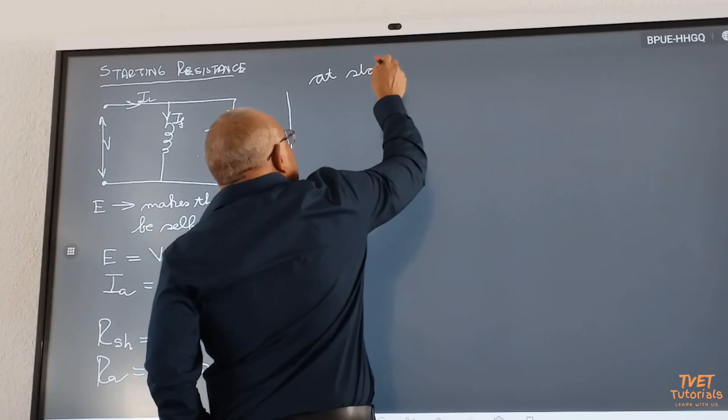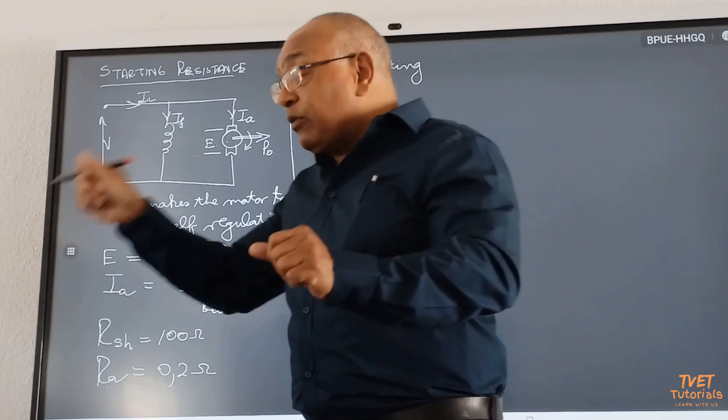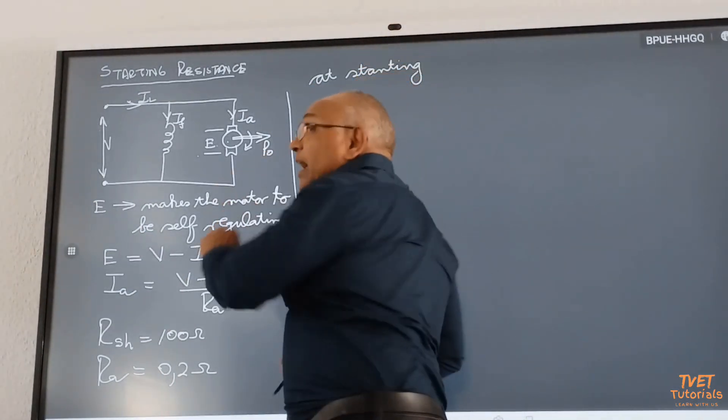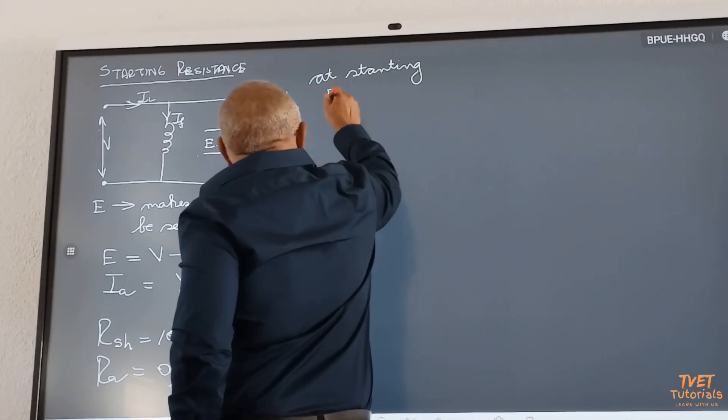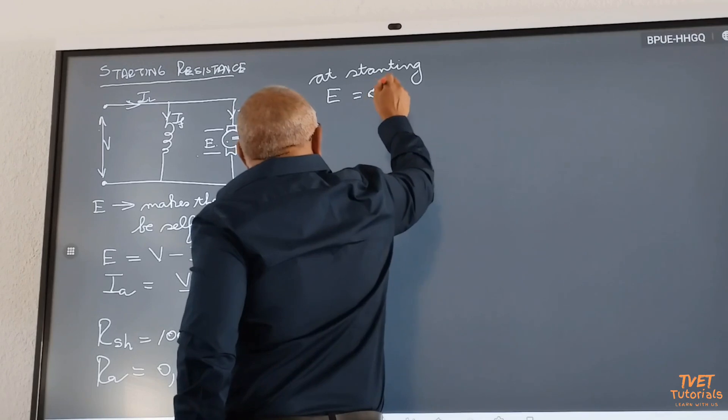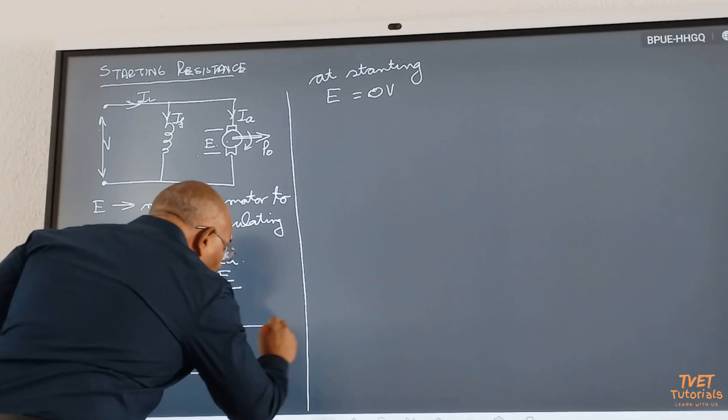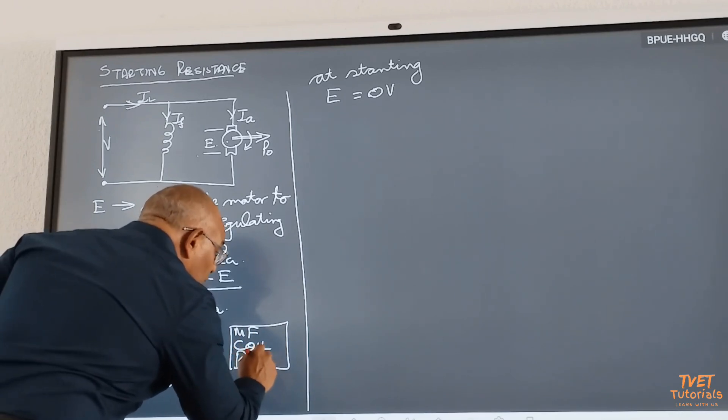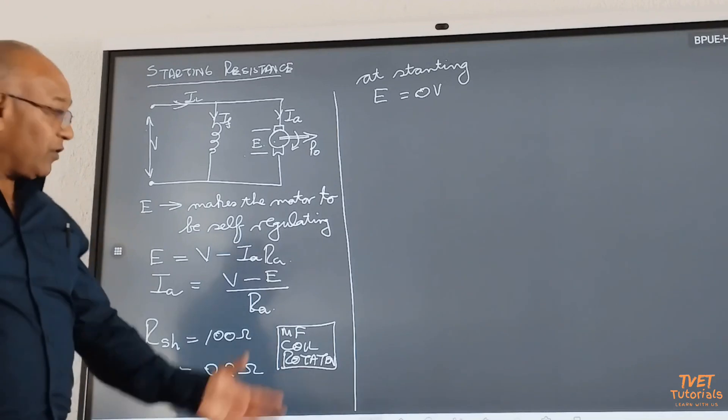At starting, what does at starting mean? We have gone to the power source and switched on. Because the armature has not yet begun to rotate, can you see that the EMF is zero? According to the three components we need for EMF: a magnetic field, a conductor or coil, and rotation. At starting, the rotation is zero, therefore the EMF is zero.